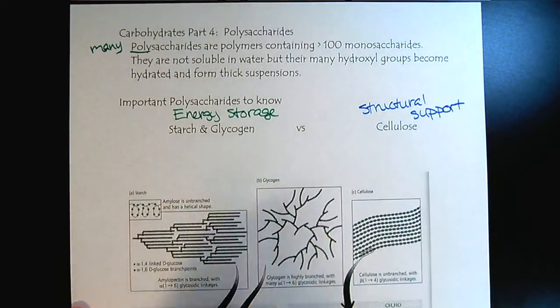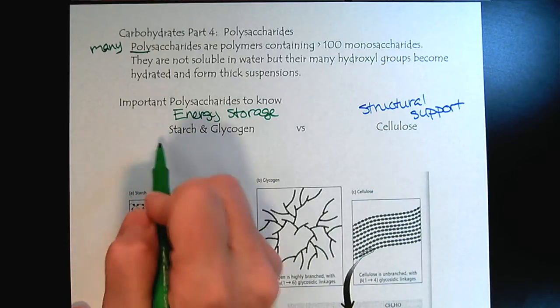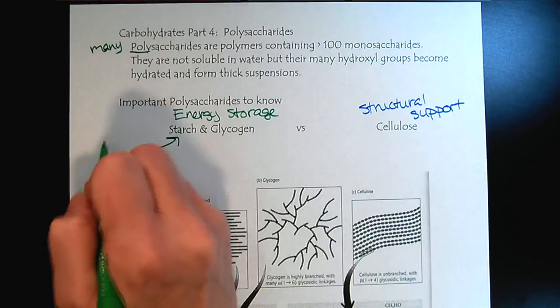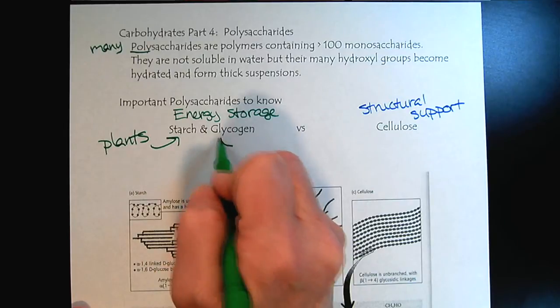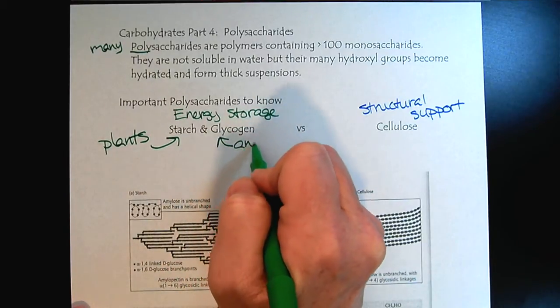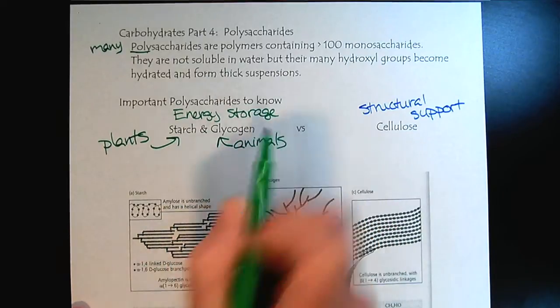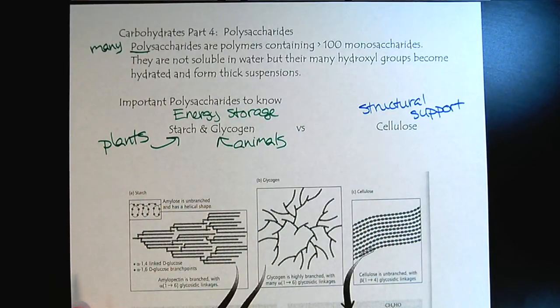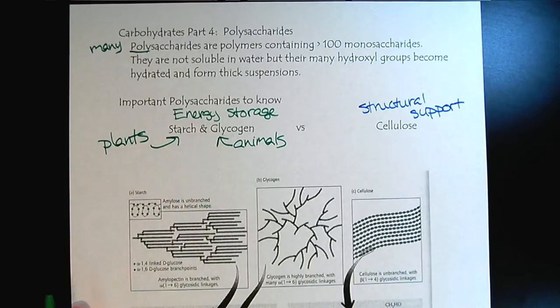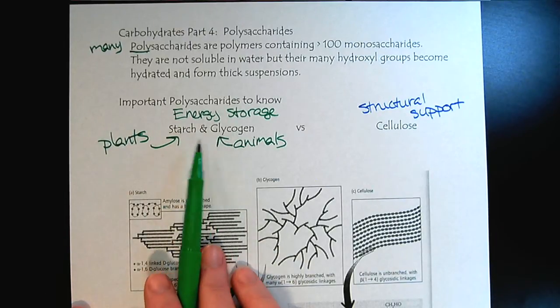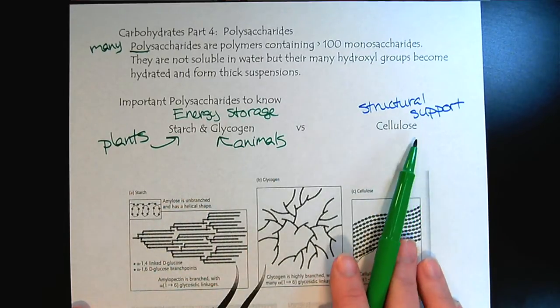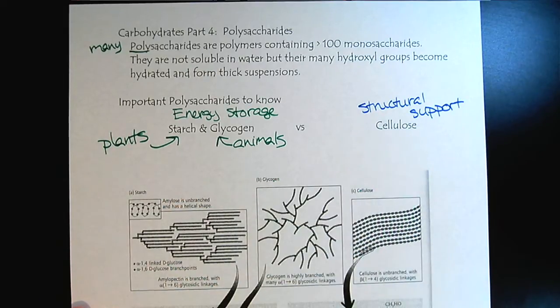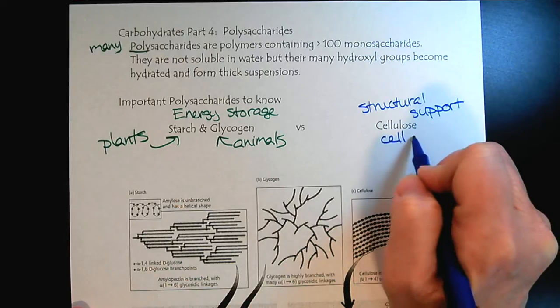So where do we encounter these polysaccharides? Well, starch is the energy storage molecule for plants. Within animals, it has a very similar structure, but we call it glycogen. So there are some structural differences between plants and animals and how we store energy. Basically, we take those extra glucose molecules and put them into polymers to store them for a rainy day. And then with cellulose, it's like you could think about like the cellulose cell walls. So also for plants.